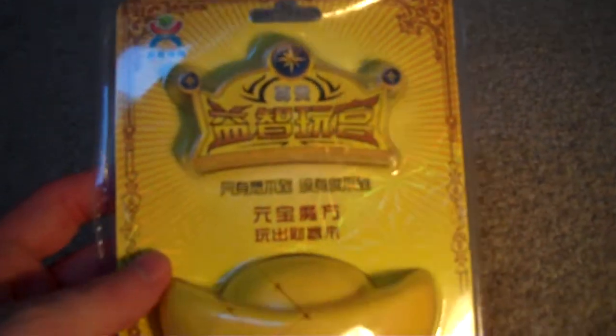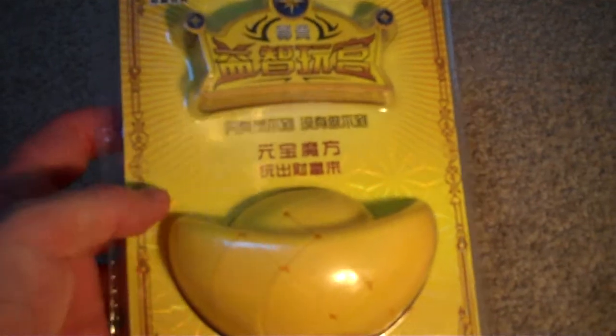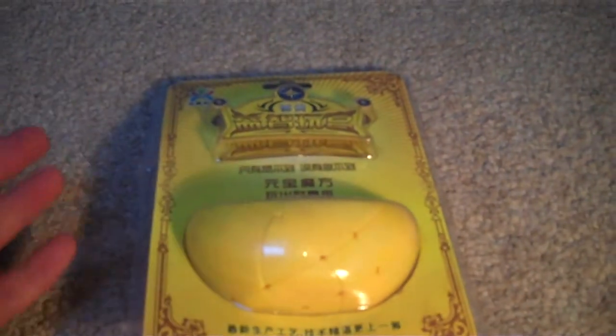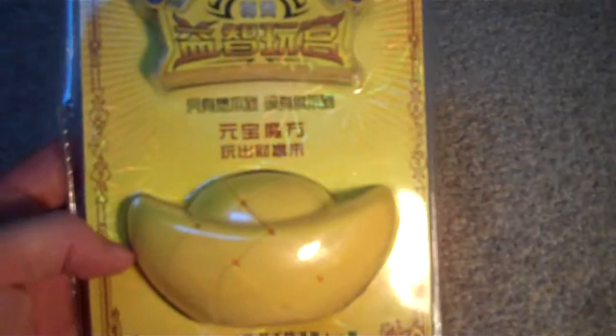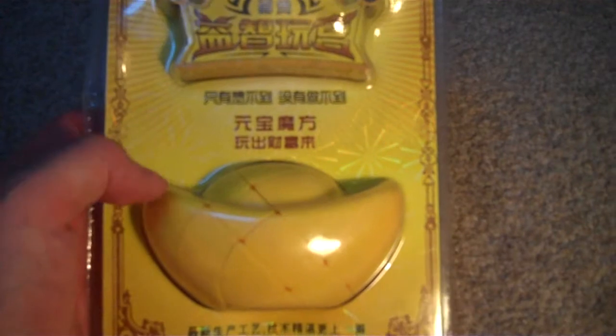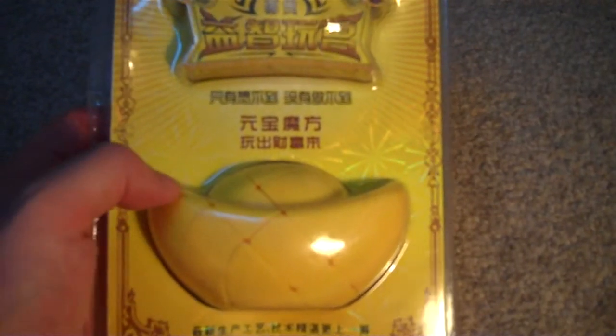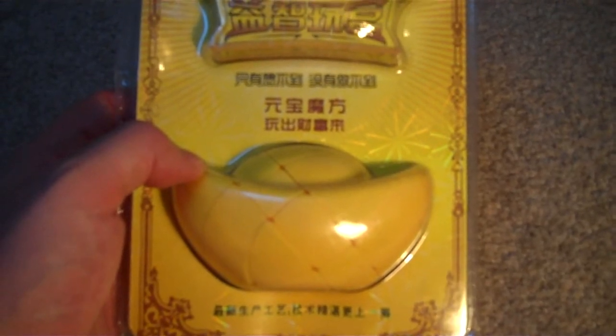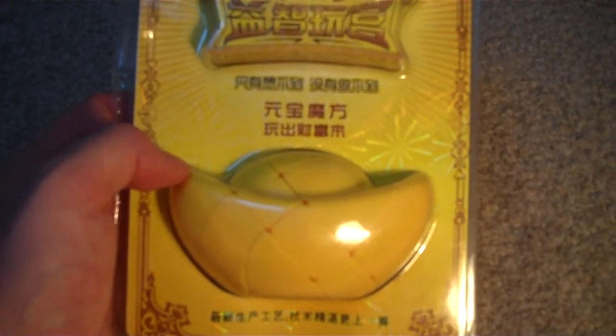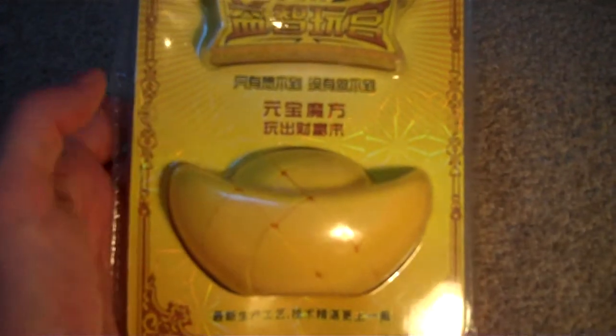So I've got no idea what any of that says. But basically in the UK, we have like gold bars. I think a lot of countries have like gold bars. But in China, the gold bars that they have are basically shaped like this, and I think they're called ingots. I'm not sure if ingot is just a general term for gold bar or whether ingot is an actual name for this actual shape.